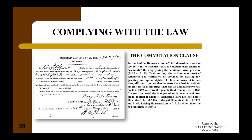Finally, final proof. The Homestead Act required that after fulfilling residence and cultivation requirements for five years, but no more than seven after entry, claimants could prove up. The General Land Office did this by having homesteaders and two credible witnesses attest to having fulfilled the law's requirements as to residence and cultivation. Initially claimants answered only a few questions, but over time questions became more numerous and detailed, with final proof forms running several pages. If the register and receiver at the District Land Office determined the proof sufficient, homesteaders received a final certificate signifying entitlement to a patent, provided the General Land Office found no irregularities upon further adjudication.